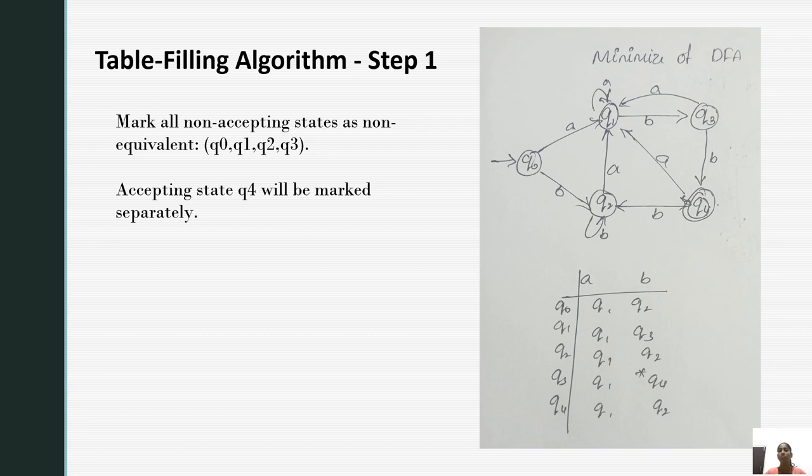Next, mark all non-accepting states as non-equivalent, that is Q0, Q1, Q2, Q3. Accepting state Q4 will be marked separately because Q4 is a final state.